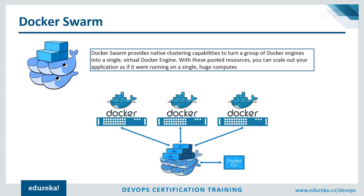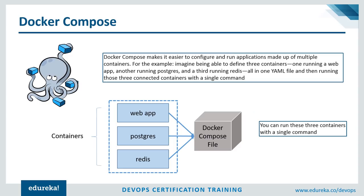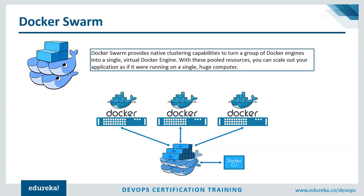Now let's look at what is Docker Swarm. Docker Swarm is a technique to create and maintain a cluster of Docker engines, meaning multiple Docker engines are connected to each other forming a network — and this network is called a Docker Swarm. There is a Docker manager which is responsible for initiating the whole Docker Swarm, and the other nodes have different services running on them. The main goal of the Docker manager is to make sure that the applications or services are running effectively on the Docker nodes.